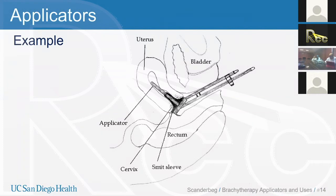Just because you have two applicators — your tandem and your ring — it doesn't mean it's a simple implant. There's still a huge potential for a mistake. You have two connectors coming out of the patient, with the tandem being more posterior and the ring more anterior. If you're unsure which is which, you only have a 50-50 chance of connecting it correctly, and you'll get a wildly different dose distribution and a medical error if you swap them and treat incorrectly. You really need to know your applicators and procedures and be 100% confident in your planning and treatment.